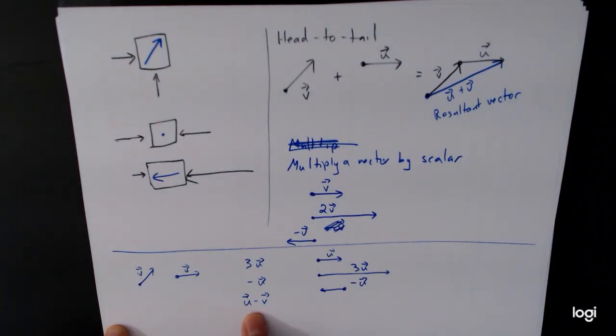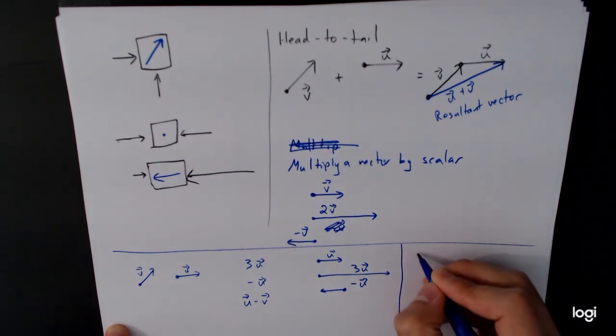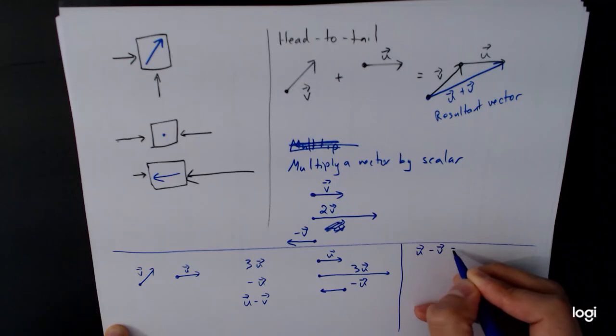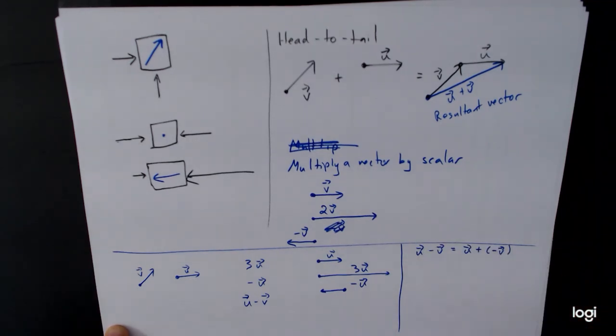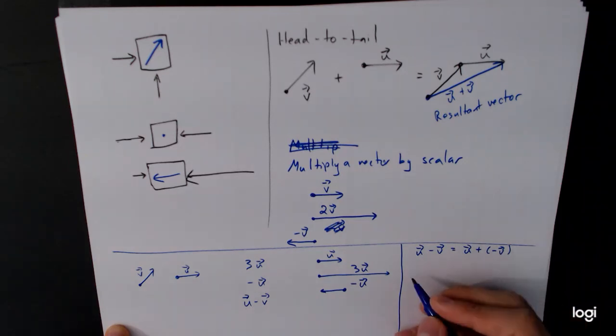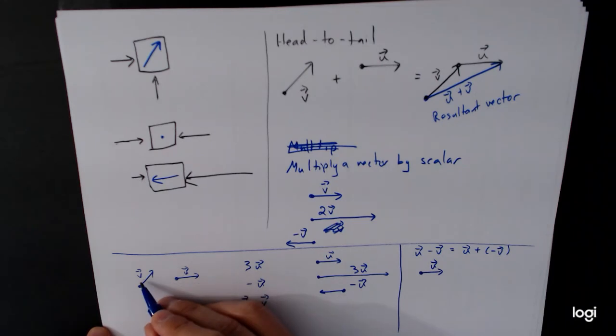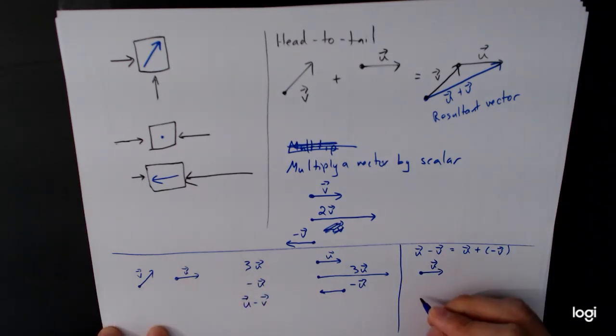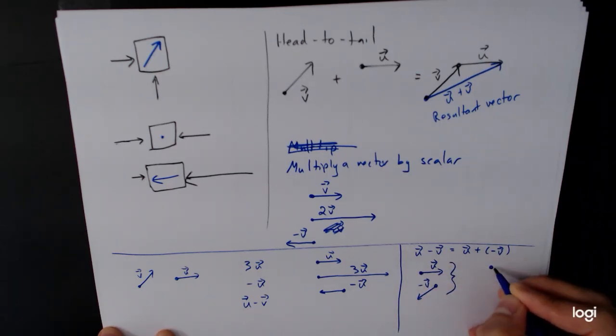And then u minus v, this is the one that is the most interesting to think about. The way we want to think about u minus v is that it's equal to u plus negative v. Subtraction is addition of the opposite. You've seen this before with integers and real numbers, and so the same thing applies here. So our vector u looks like this. The vector v is this thing but turned around. So it's going to go like this. So that's u plus negative v.